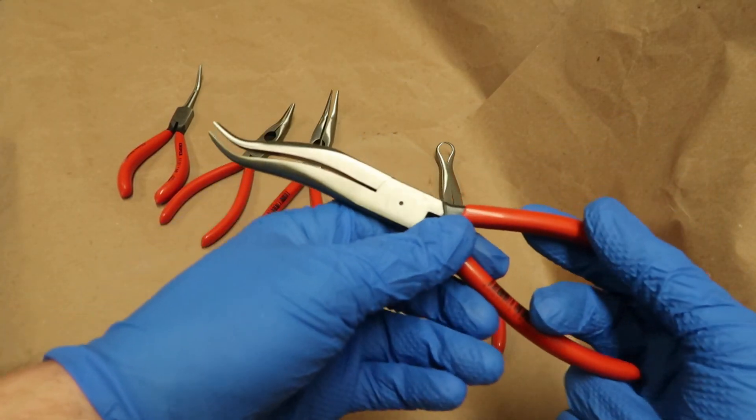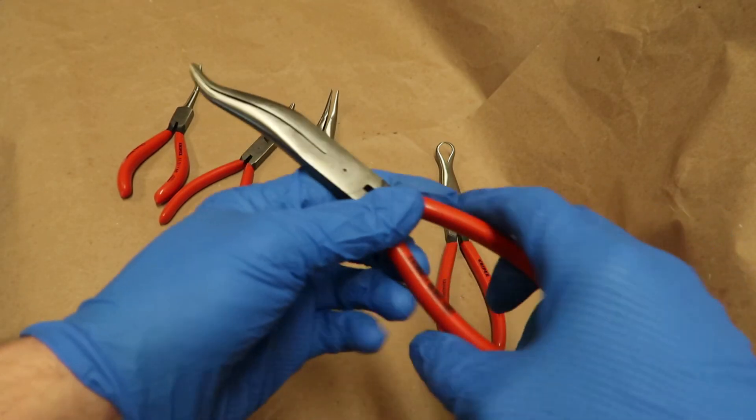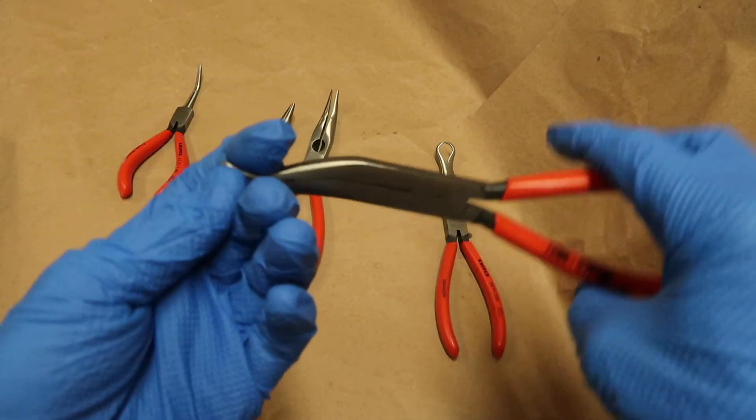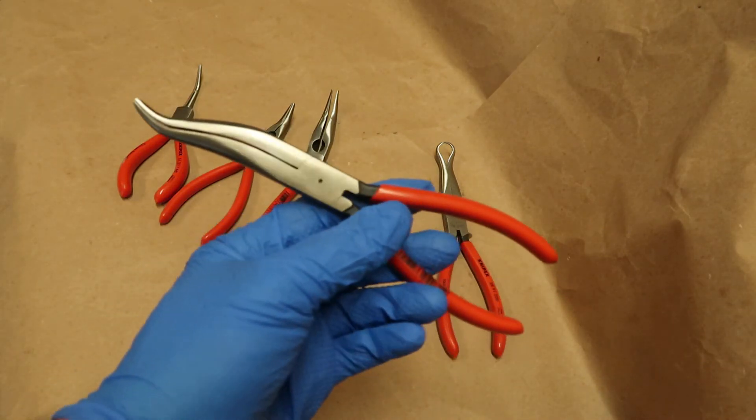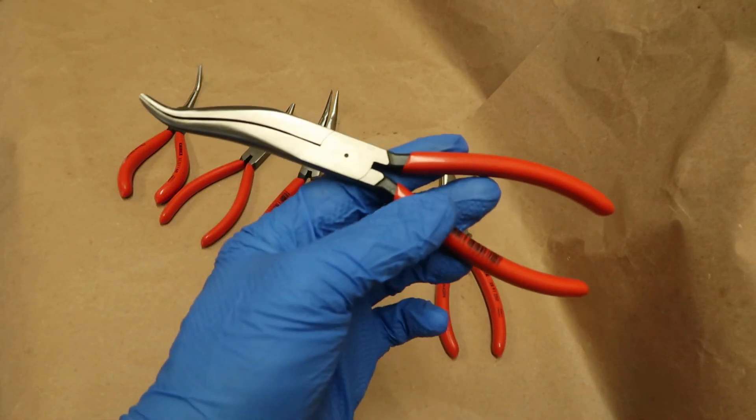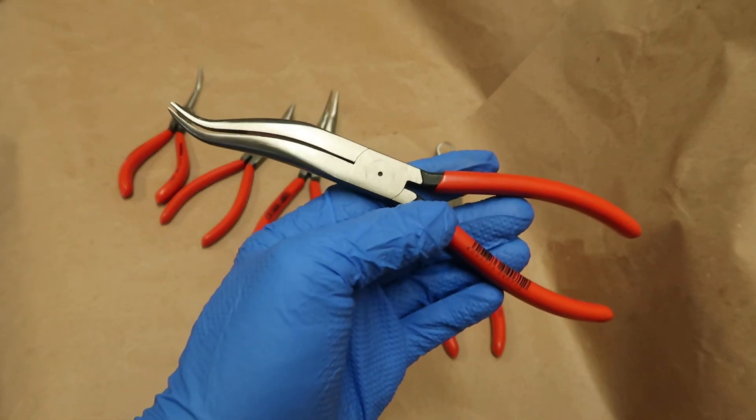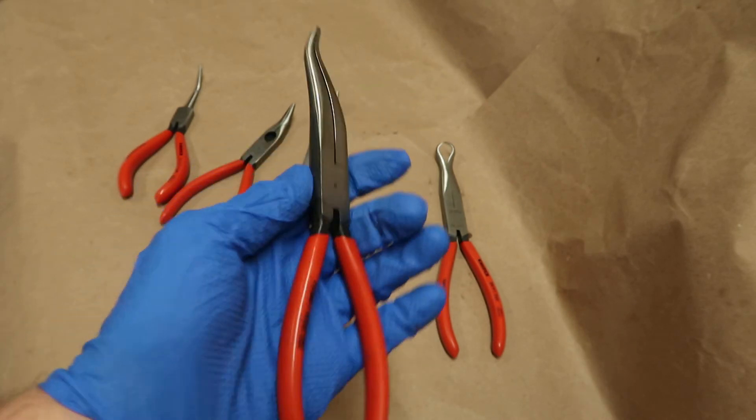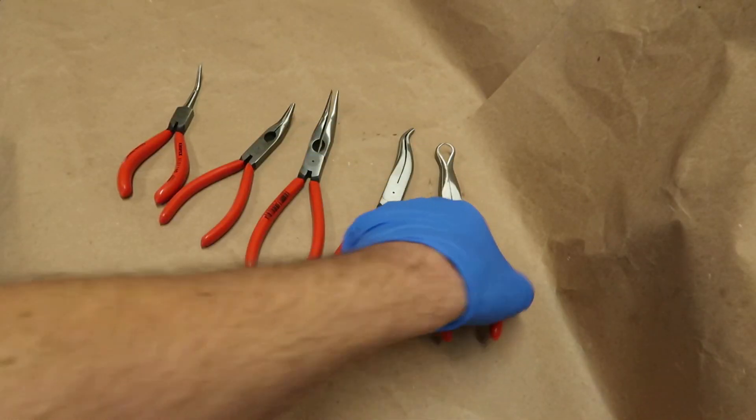These are quite handy getting in there and grabbing something. I do a lot of leveraging with that bent nose. I'll pull something out using some leverage. It's a kind of strange shape when you first see it, but it does really work if you use that. You can get around things. Very nice set of pliers.